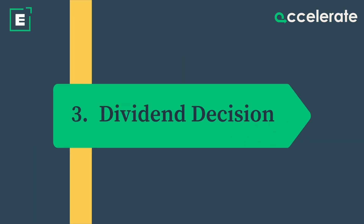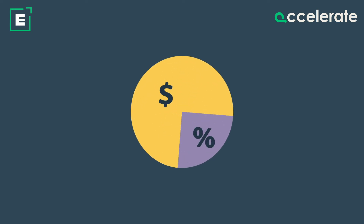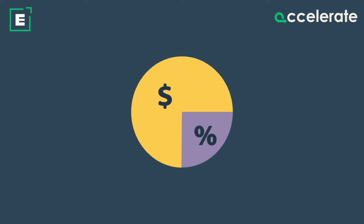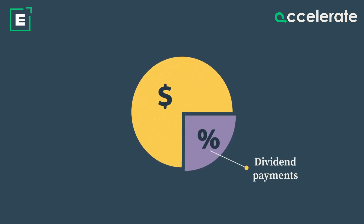3. Dividend decision: Dividend decisions are decisions regarding a company's dividend payments in relation to how much profit it retains for future growth.